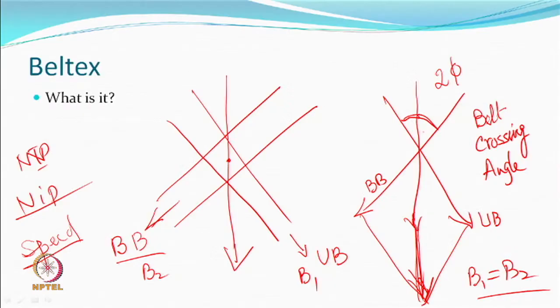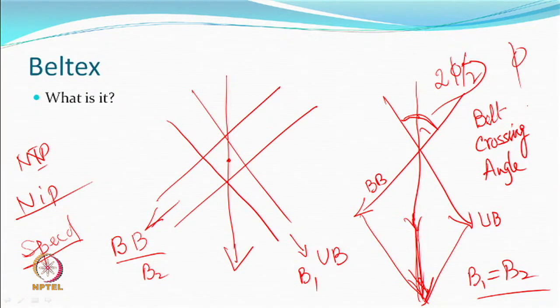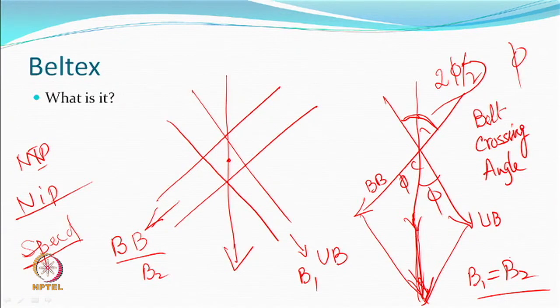The yarn is actually moving in the center of these crossing belts, so that is half of 2φ — that means φ. You have half the belt crossing angle as φ, so both sides are φ, and therefore the yarn is moving in the center. If B1 and B2 are the same, then the direction of the force exerted on the yarn will also be along the direction of yarn movement.